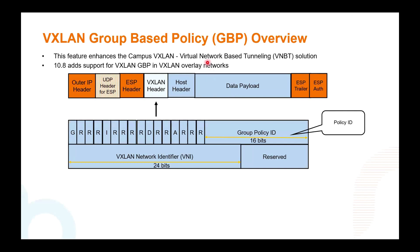VXLAN GBP, or Group Based Policy, is a feature that enhances the campus VXLAN VMBT or Virtual Network Based Tunneling Solution. 10.8 will add support for GBP in VXLAN overlay networks. The Group Policy ID is what we refer to as GBP, and that's part of the VXLAN header. We used to have the VNI and reserve fields, and the Group Policy ID is now added. This is supported on the 6300, 6400, and 8360 platforms.